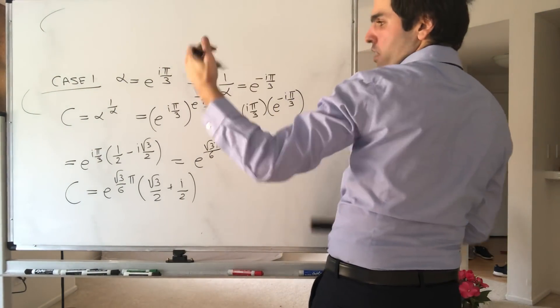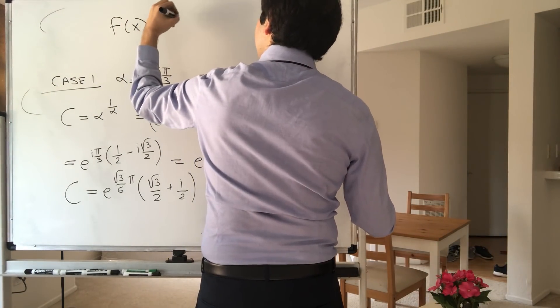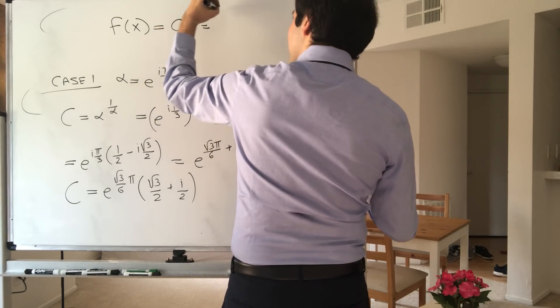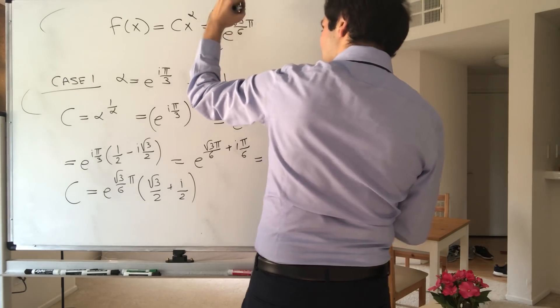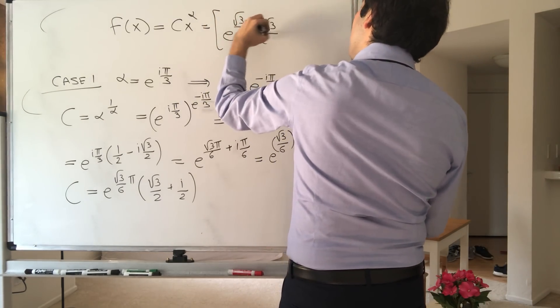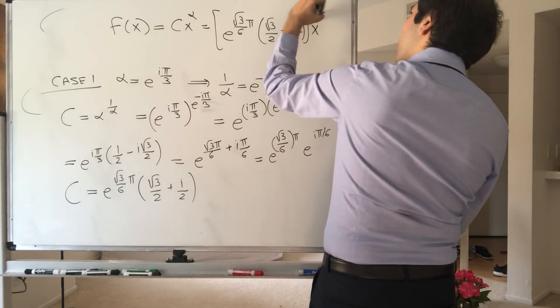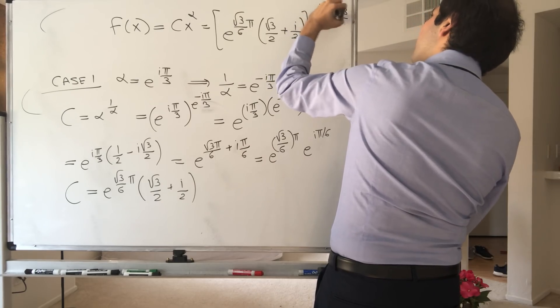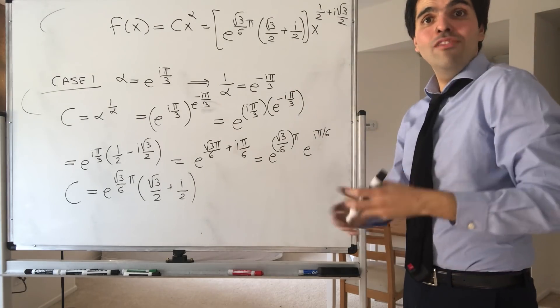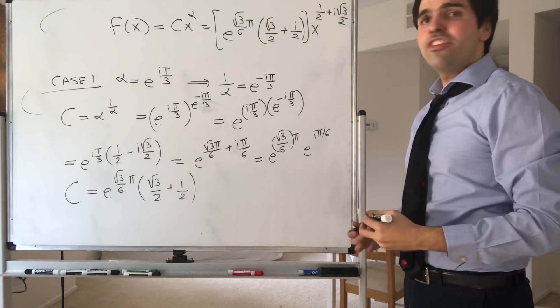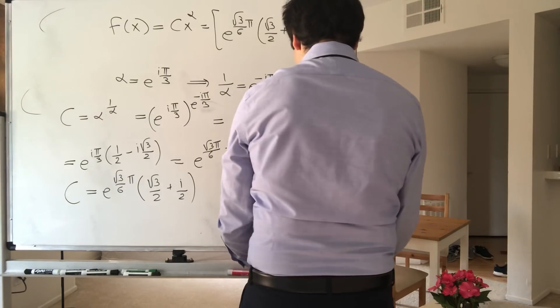Finally, what you get, a very non-trivial solution of this is f of x is, again, cx to the alpha. And that just becomes this horrible thing, e to the square root of 3 over 6 pi times square root of 3 over 2 plus i over 2. And then x to the 1 half plus i square root of 3 over 2. That was one case, however, the nice thing is, the other case is almost identical.